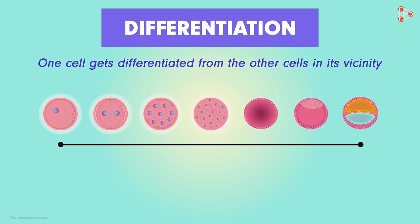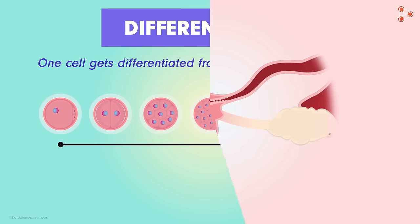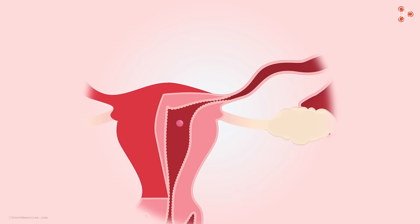So coming back to the blastocyst stage, it is now a mass containing differentiated cells. As it grows further, the body of the embryo begins to develop. But for its proper growth and development, the embryo will require nutrition.